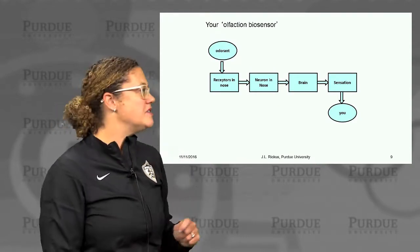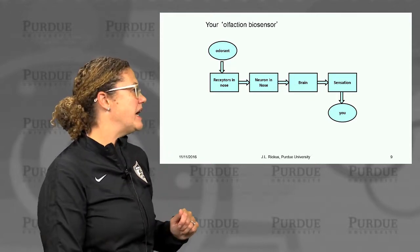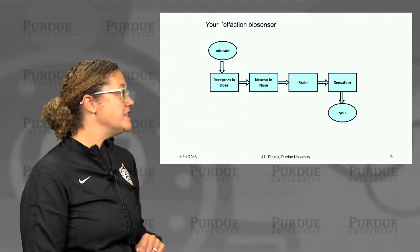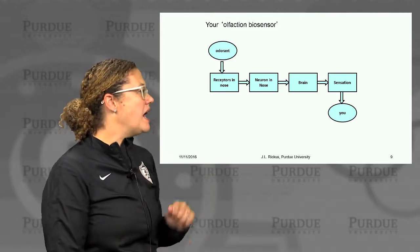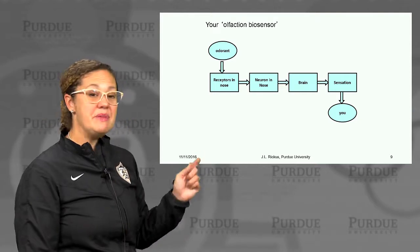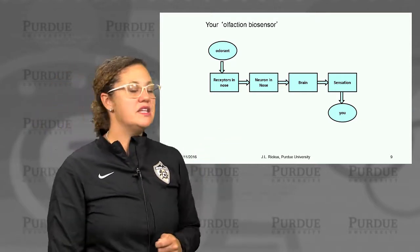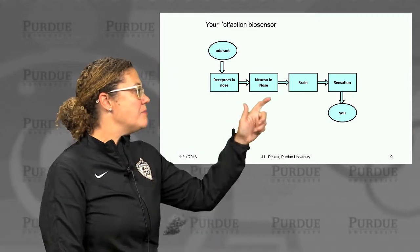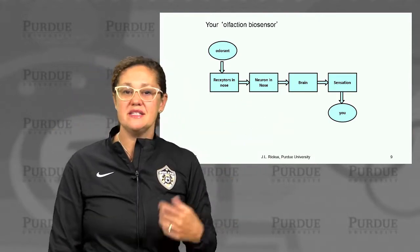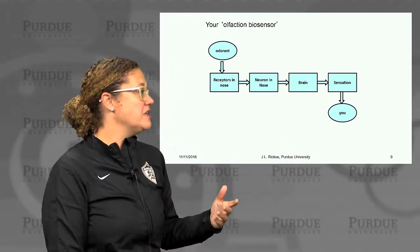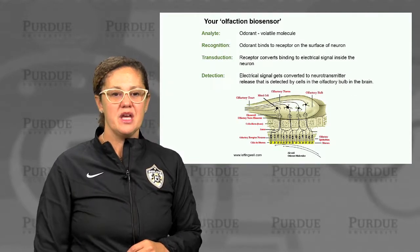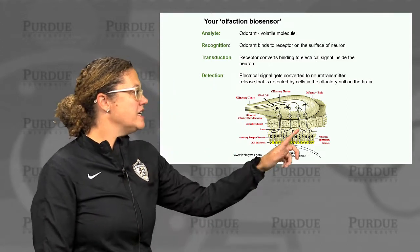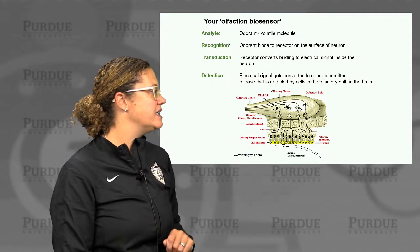If we map what's happening in your body onto our biosensor framework: our target is some odorant. We have receptors in the nose — proteins that bind and recognize these molecules and patterns of those molecules. That gets transduced in the neurons in the nose into a signal measurable by the brain. And the brain converts that into a sensation you experience, which essentially becomes the display to you, the end user. This molecule is your analyte.